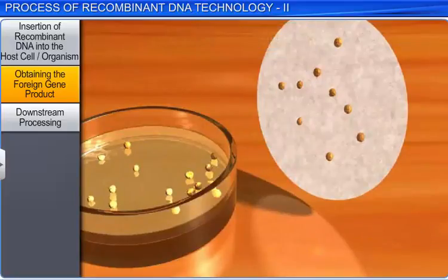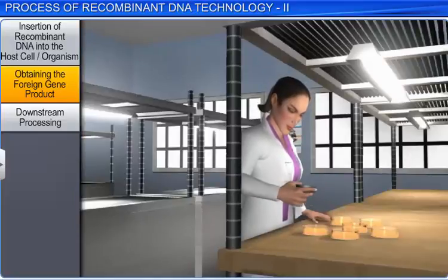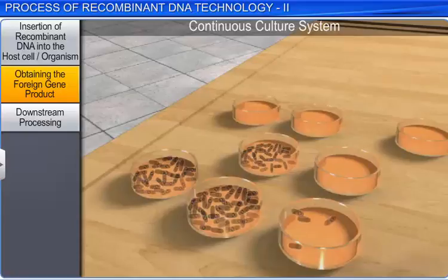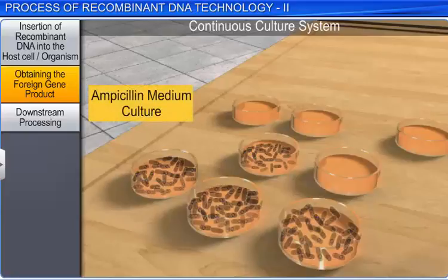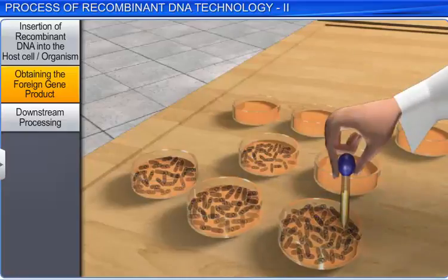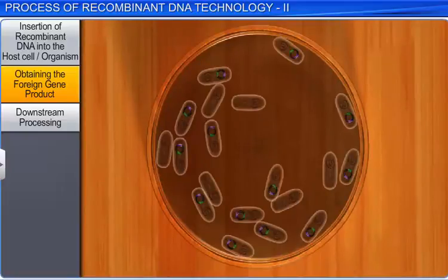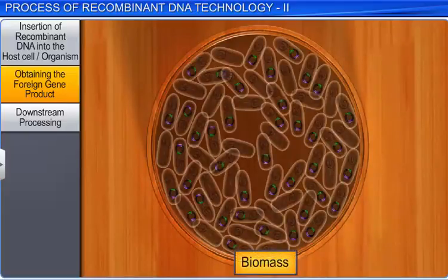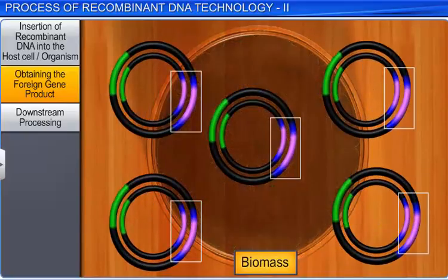After the purification process, the cells storing cloned genes of interest may be grown on a small scale in the laboratory. These cells can also be multiplied in a continuous culture system, in which the used medium is drained from one side while a fresh medium is added from the other, so that the cells remain in their most exponential phase. Therefore, a continuous culturing system produces a large number of cells with recombinant DNA or biomass, which results in higher yields of the desired protein.